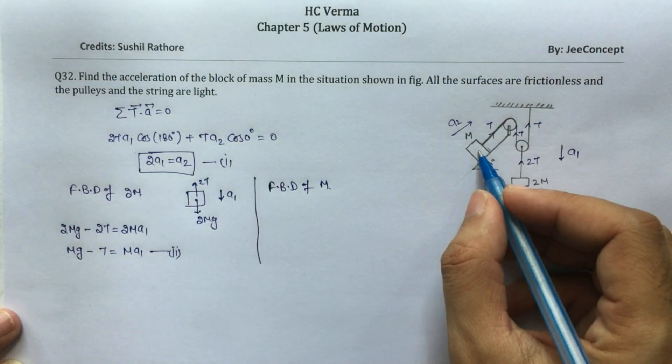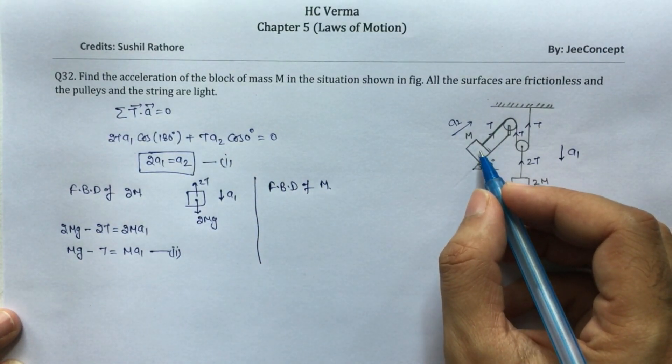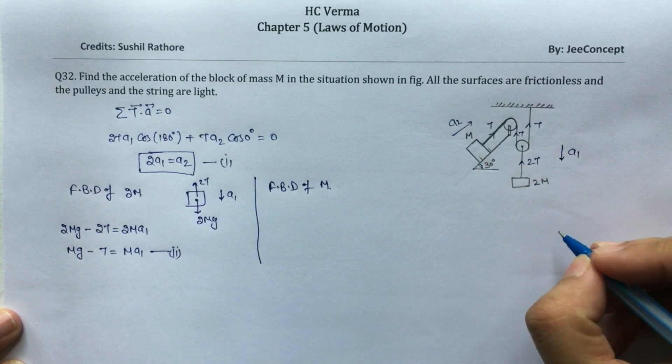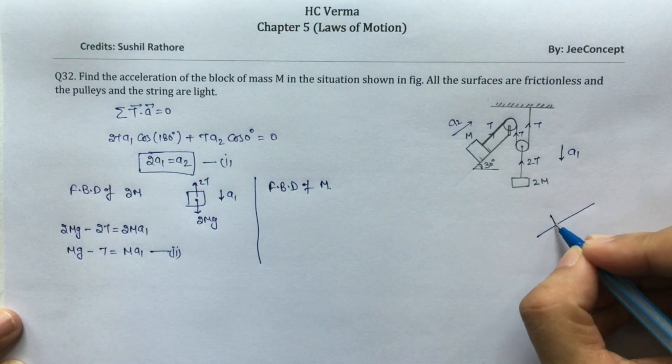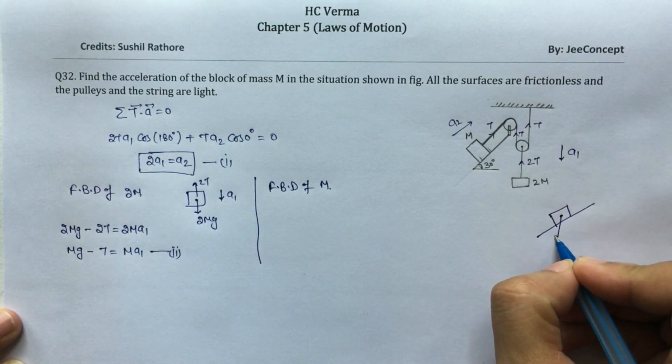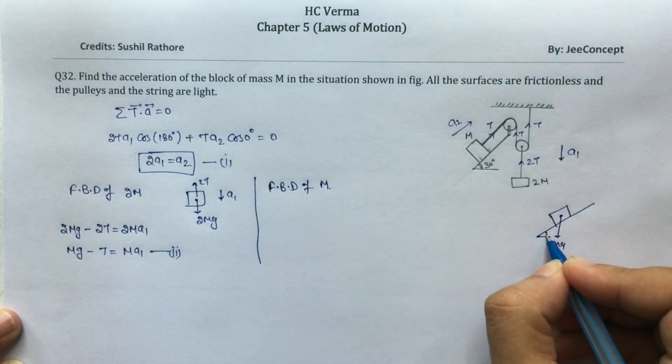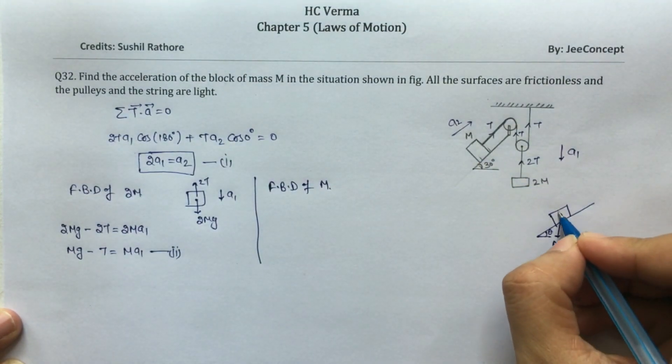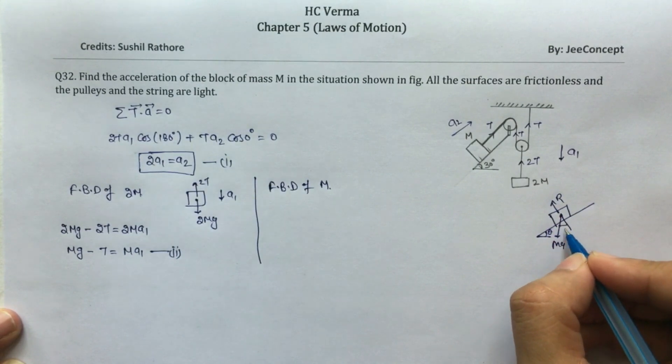Now the FBD of m. Let us try to find out the reaction forces and mg acting on this block. The mg is downward, this is angle theta, this is the reaction force, this is angle theta.